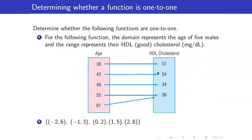In our previous video lectures, we presented four different ways to represent a function: as a map, a set of ordered pairs, a graph, and an equation. What we will do is, given these various representations of a function, determine whether it is one-to-one or not.